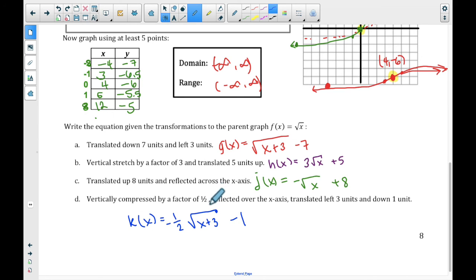Okay, vertically compressed by a factor of 1 half, reflected over the x-axis means a negative outside. Left 3 units means plus 3 on the inside, and down 1 means minus 1 on the outside. All right, we'll practice some of this in class next time.